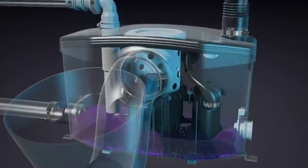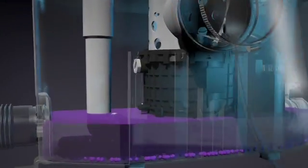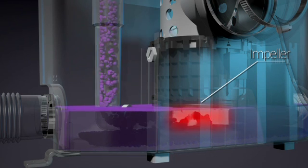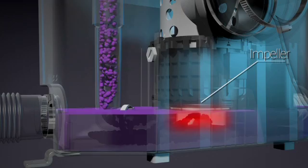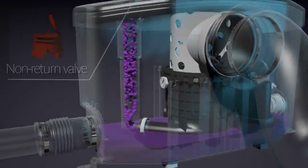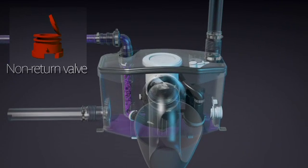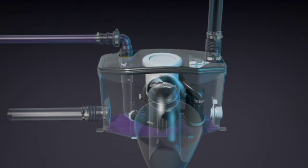These are then picked up by the impeller and pumped out through the internal discharge pipe. Once it exits the pump, the waste goes through a discharge elbow which connects to the 3-quarter inch pipe. A built-in non-return valve prevents the waste water from traveling back into the pump once the system turns off.